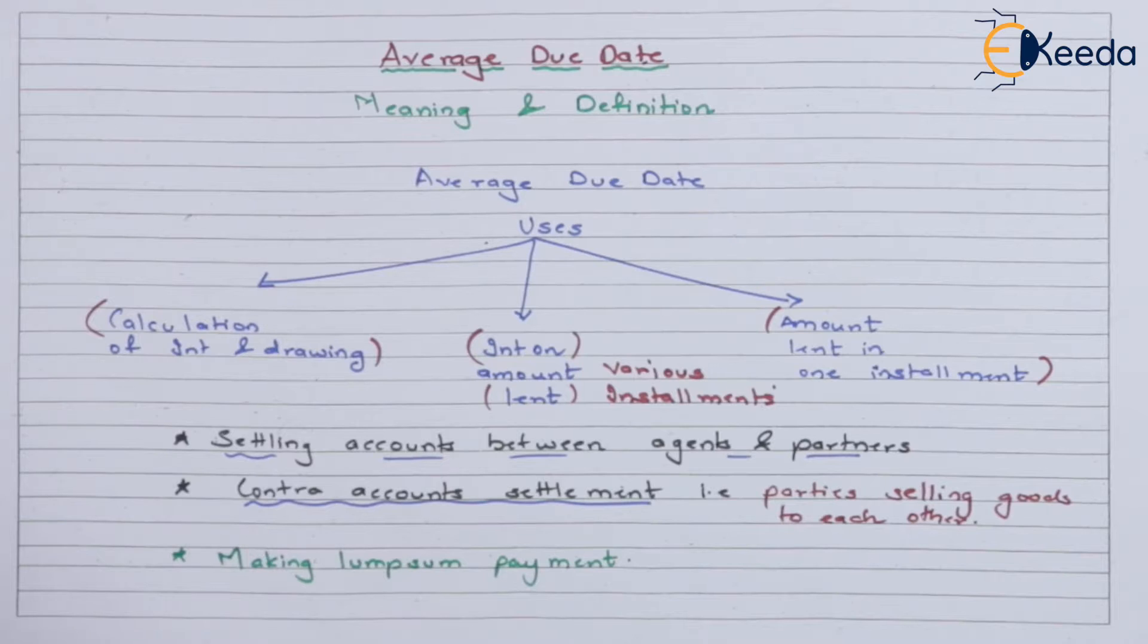The next topic that we have to discuss is the contra account settlement. That means partners who sell goods between each other or the first situation that we spoke about where there is one party and there is a second party and the goods are being sold and purchased between these two parties itself. But there are numerous transactions. So that situation is basically called contra account settlement. Whenever such situation arises, you can use average due date concept to get it resolved.